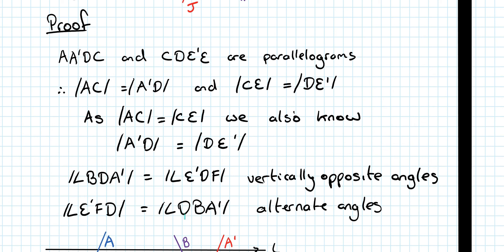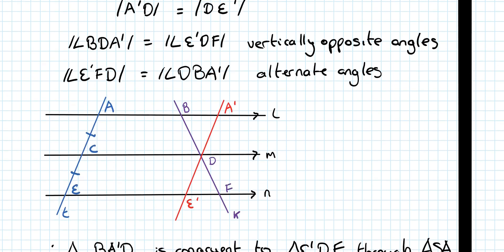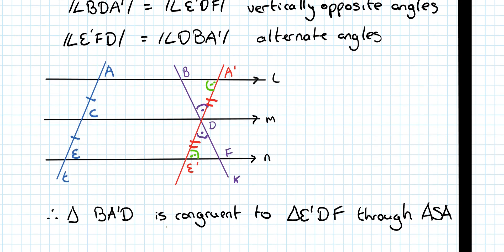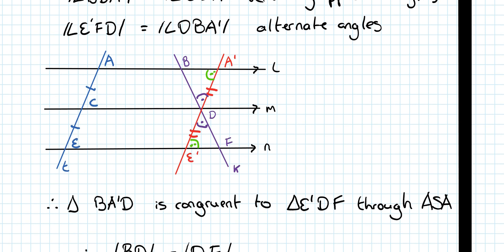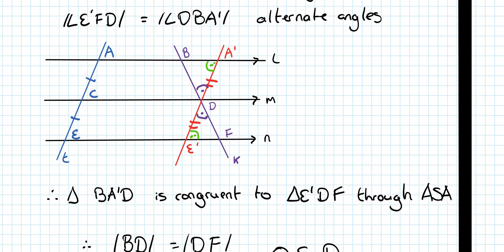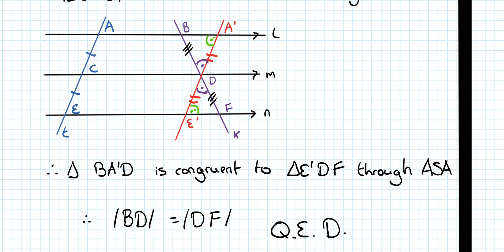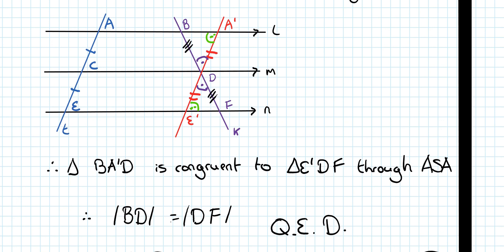So, E prime, F, D, and D, B, A prime are alternate angles. So, in here, I know this length is equal to that. I know this angle here is equal to this angle here. And through vertically opposite angles, I know this angle here is equal to this angle here. Now, what have I got? I've got two triangles. The triangle B, A prime, D, and the triangle D, E prime, F. This shows that they are congruent through angle side angle. We're reminding you of junior search trigonometry there. If they are congruent, it also means that this length must equal to that length there. And that has proven, then, that the length BD is equal to DF.